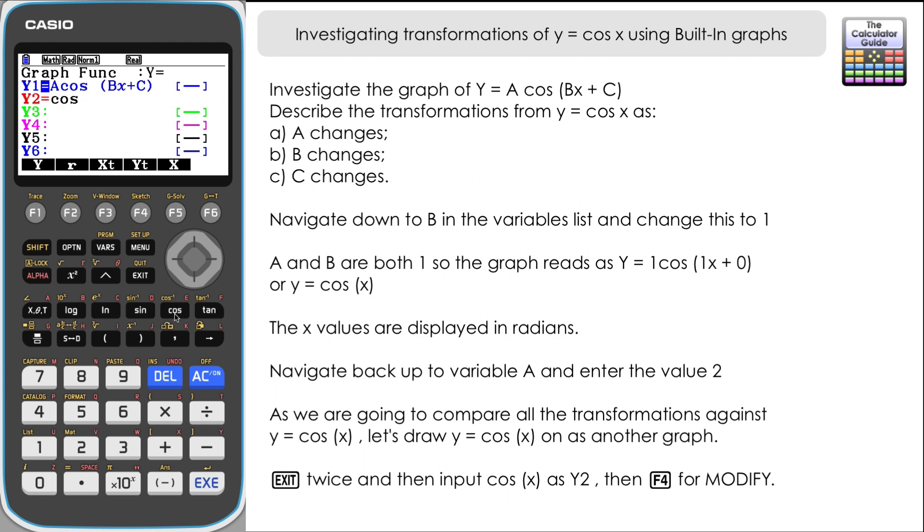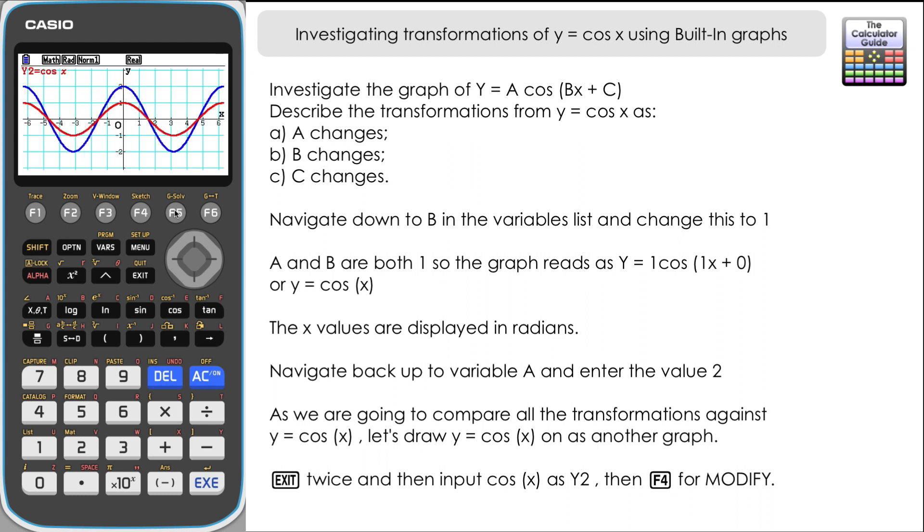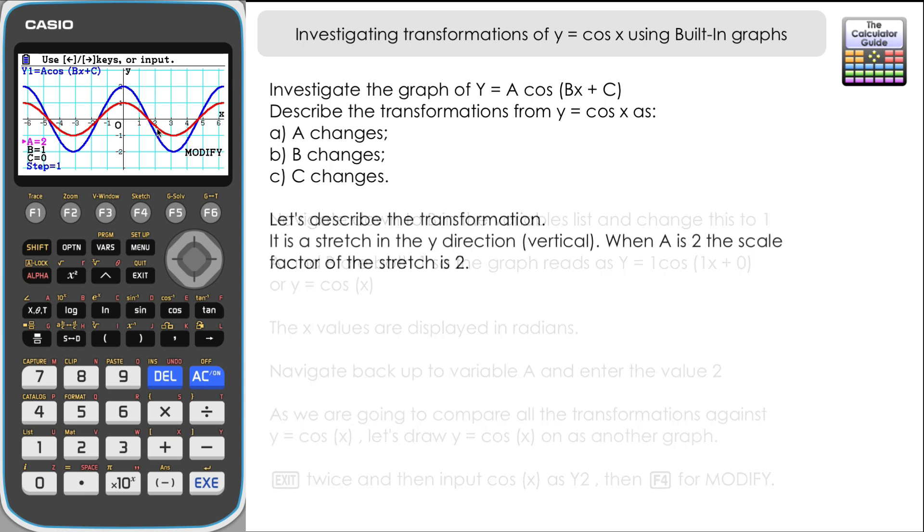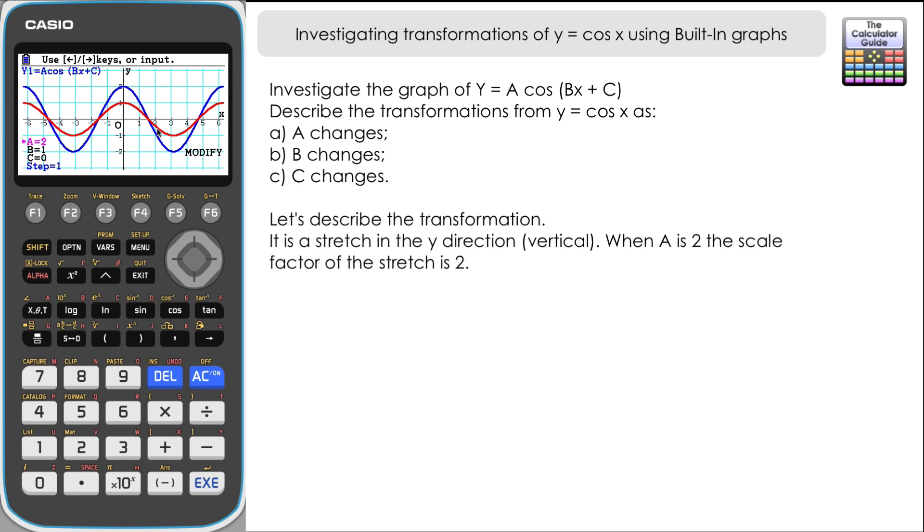If we press modify again then we can see that we've got y equals cosine x on there permanently, so we've always got that to compare against. We're just looking for how the blue graph, the one we're modifying, compares with the red graph. And hopefully you can see if you weren't too sure before, you can see that this is a stretch in the y direction, scale factor of 2.